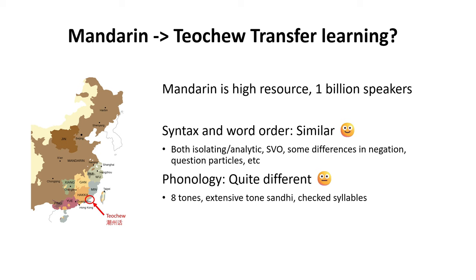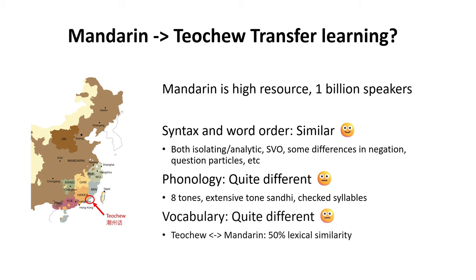The phonology is quite different, though. Diaoju has about eight tones and extensive tone sandhi, meaning that the tones can change a lot depending on the context. And it has checked syllables, which do not exist in Mandarin. The vocabulary is also quite different, and I think this part is going to be the most challenging. I've read that Diaoju and Mandarin have about 50% lexical similarity. But overall, these two languages are quite different, but similar enough that knowing one would definitely help with learning the other, whether you're a human or AI.